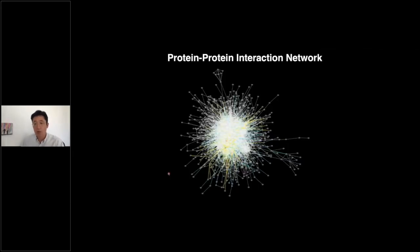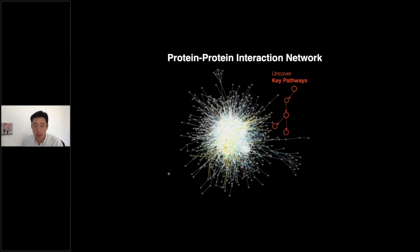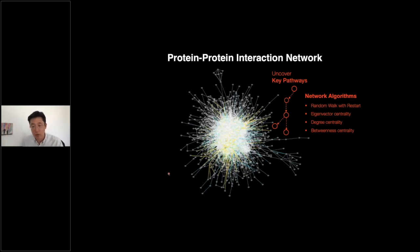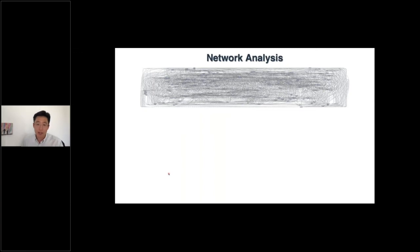When we constructed the protein-protein interaction network, we ended up with a very complex network. That is why we need network analysis to uncover the pathways. We used four different network algorithms for this.